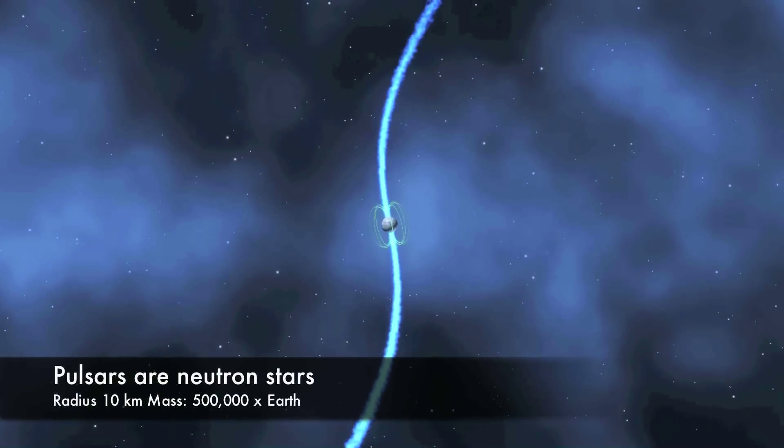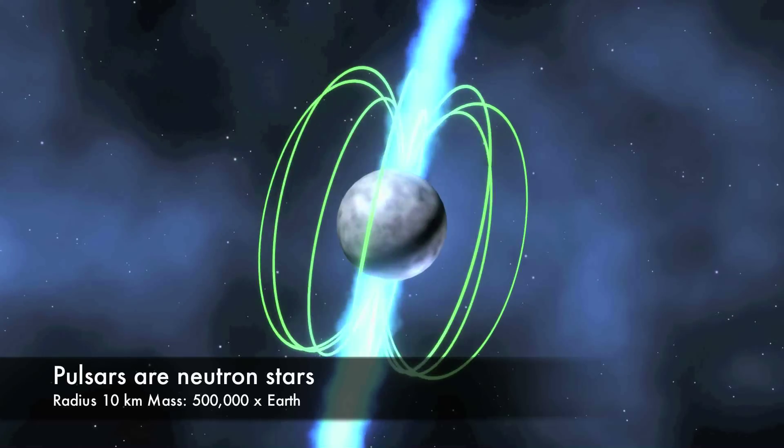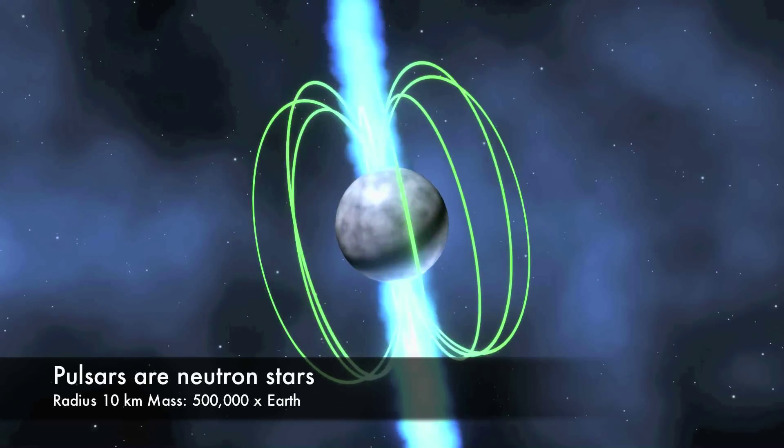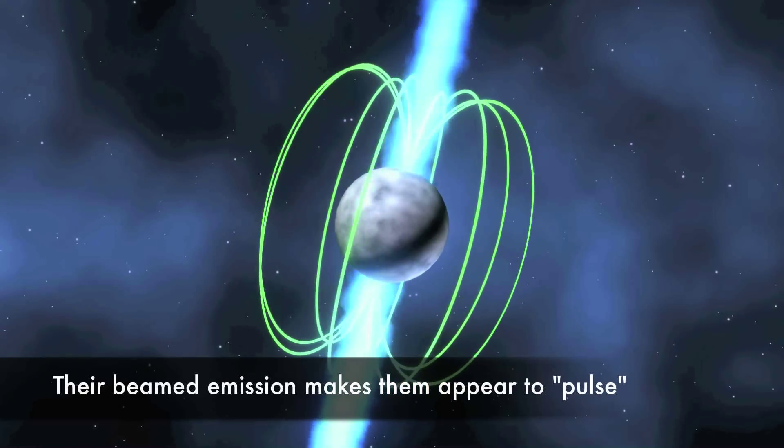Pulsars are neutron stars. They weigh about a half million times as much as the Earth but are only 20 km across. Their rotation makes them appear to pulse once per rotation period and they spin up to an amazing 700 times per second.